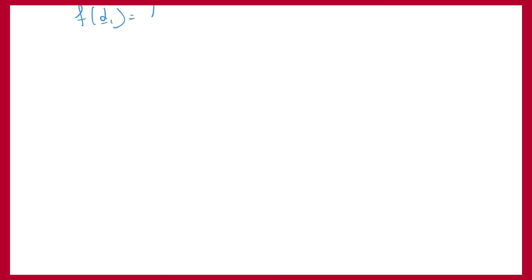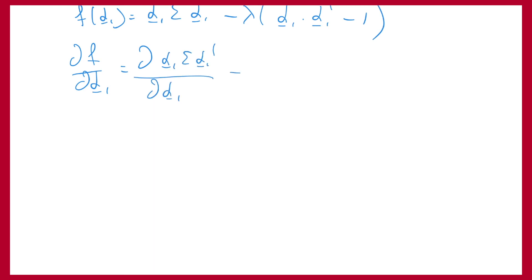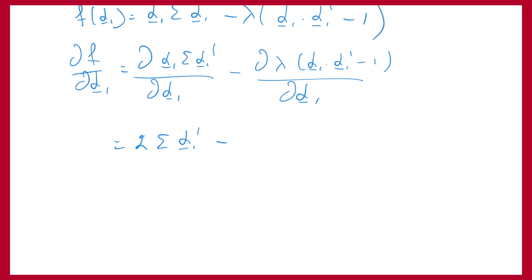The function f in alpha_1 was given by the difference of the two terms, which means that the derivative of f with respect to alpha_1 is given by the difference of the two derivatives we calculated. We find 2 * sigma * alpha_1^T for the first term and 2 * lambda * alpha_1^T for the second. So the final result is 2 * sigma * alpha_1^T minus 2 * lambda * alpha_1^T, and this concludes the exercise.